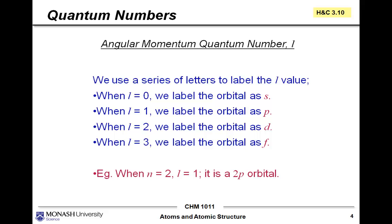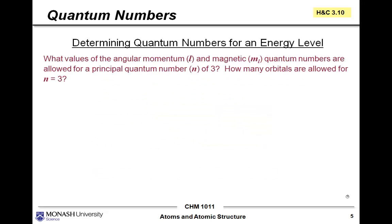A few comments about angular momentum quantum number l. When l equals 0, historically we've used a series of letters to label the l value. When l equals 0, we label the orbital as an s orbital. When l equals 1, we label it as a p orbital. L equals 2, we label it as a d orbital. When l equals 3, we label this as an f orbital. For example, when n equals 2 and l equals 1, we call this a 2p orbital. We're using the number 2 to describe the principal quantum number, but the angular momentum quantum number is designated by the letter p.